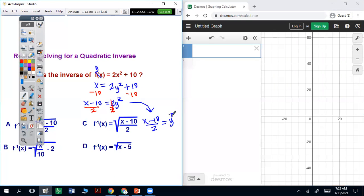Now when you're square rooting it, you have to square root the entire side. So you don't just do the x minus 10, you do the x minus 10 over 2 all under the square root. We know the square root cancels out a square. So it's going to be the square root of x minus 10 over 2 equals y.